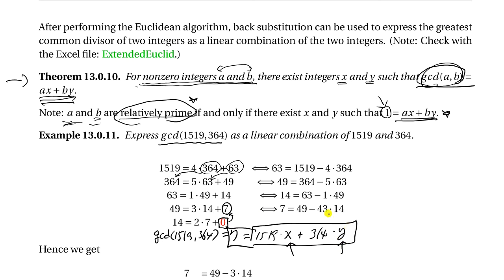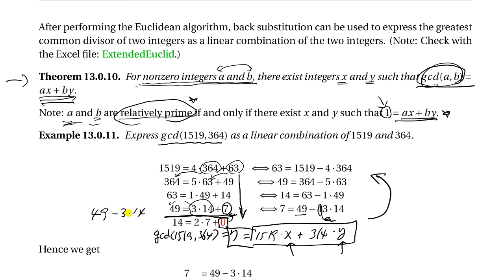To find x and y, we work backwards. From the last step, 7 can be written as 49 minus 3 times 14. If we subtract that, the left-hand side becomes 49 minus 3 times 14, which equals 7. Then 14 can be replaced: 63 minus 1 times 49. So we substitute back this way.